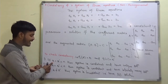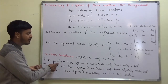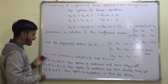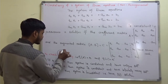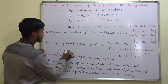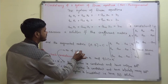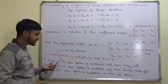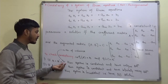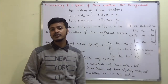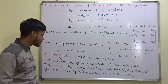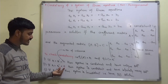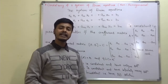If the rank of matrix A is the same as the rank of the augmented matrix, and if it is also equal to n — the number of unknowns — then the system is consistent and it will have a unique solution. If the rank is the same but less than the number of unknowns, then the system is consistent and has infinitely many solutions.